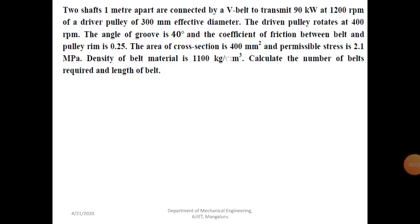Welcome to Design of Machine Element 2, second module. We'll continue with problems today — we'll solve some problems based on V-belt drive. In V-belt, we have two important types of problems. One type is almost similar to the design procedure we use for flat belt drive. The other type involves selection of belt cross-section such as A, B, C, D, and E from the manufacturer's catalog. Both types are very important from the exam point of view.